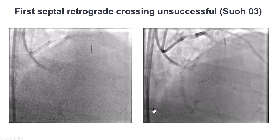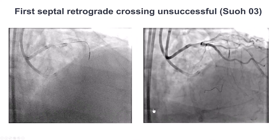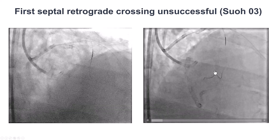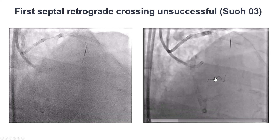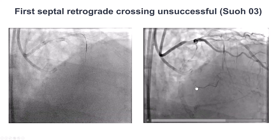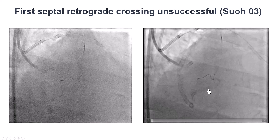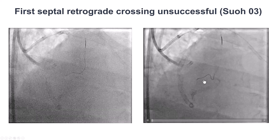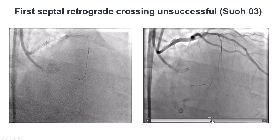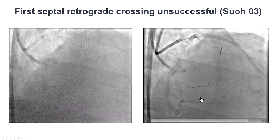We went back in and tried a SUO O3 guidewire that is very soft with a 0.3 gram tip. We made some progress and were able to advance it partially inside the collateral, but unfortunately, even after delivering the microcatheter further down, we were actually unable to cross all the way into the right coronary.